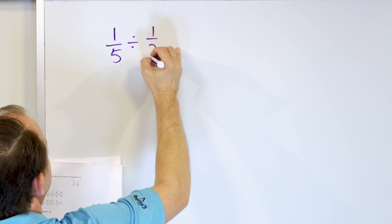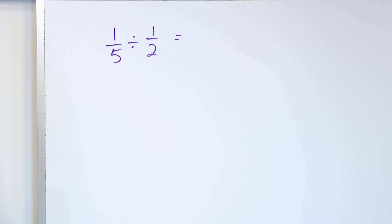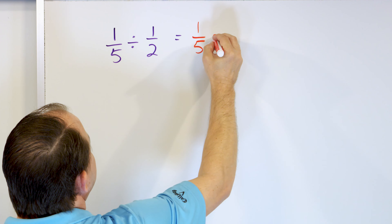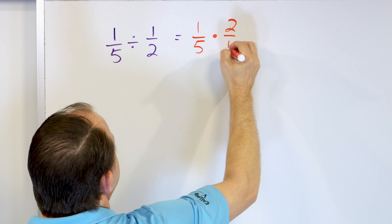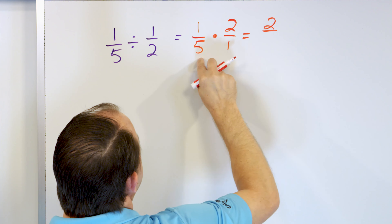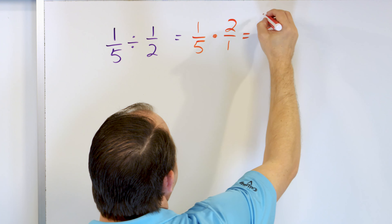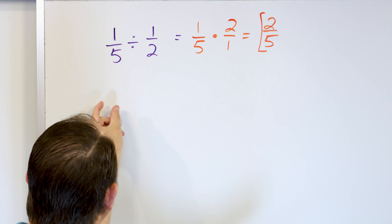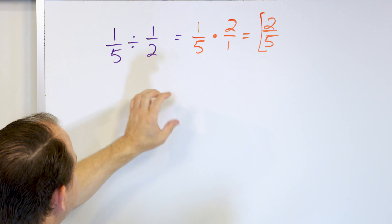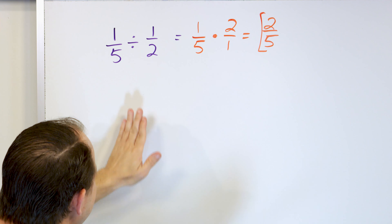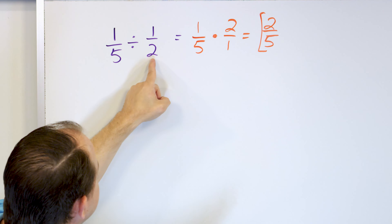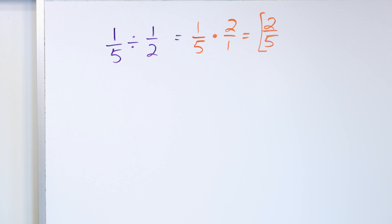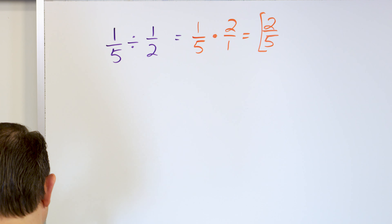One fifth divided by 1/2. Leave the 1/5 alone, change to multiplication, flip the second fraction to 2 over 1. Multiply: 1 times 2 is 2, and 5 times 1 is 5. We cannot simplify this, so 2/5 is the answer. If I take 1/5, which is really small, and divide by 1/2, which is larger, it cannot even go in there one time — only 2/5 of the thing we're dividing by can actually fit in.